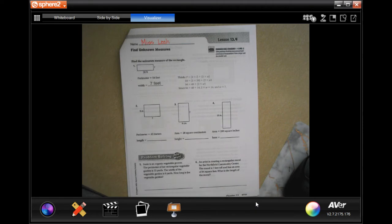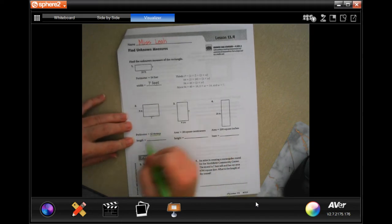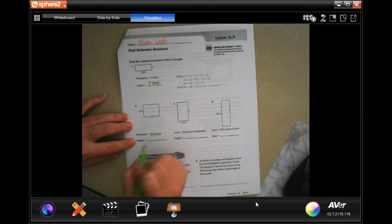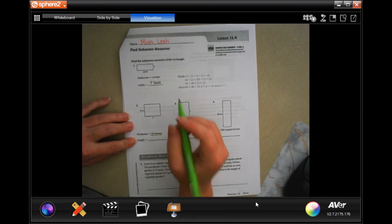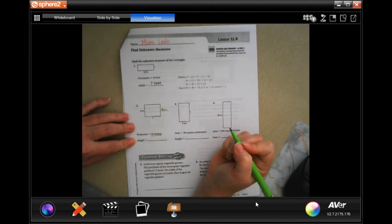We're going to go ahead and get started with number two. It wants to know the perimeter, or it tells us the perimeter, and it wants us to come up with what the length is. Well, actually, that's pretty easy. So, if this side is nine, it means that this side is also nine.